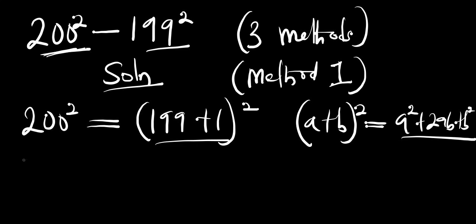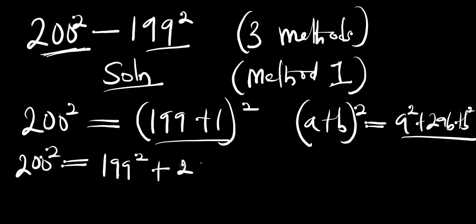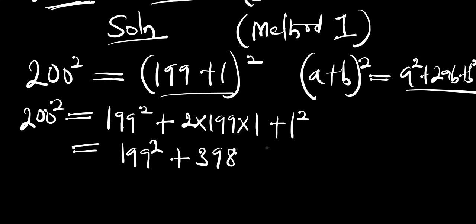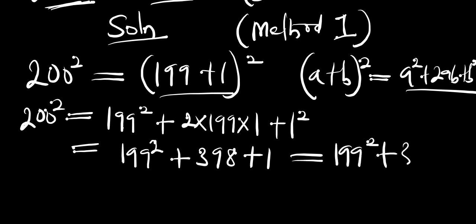Using that identity, we get 200 squared equals a squared, which is simply 199 squared, plus 2ab which is 2 times 199 times 1, plus 1 squared. This gives us 199 squared plus 2 times 199 times 1, which equals 398, plus 1.